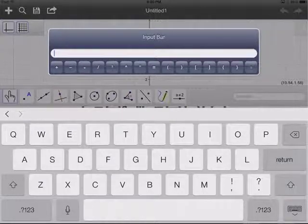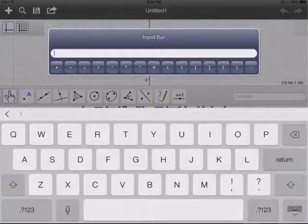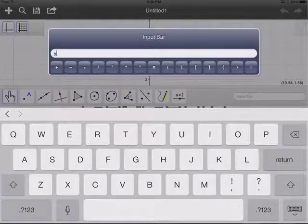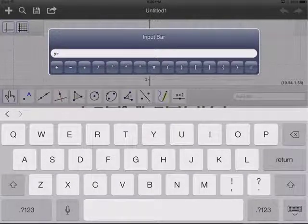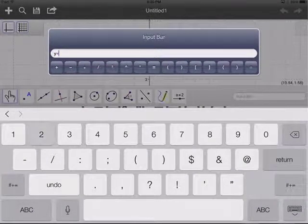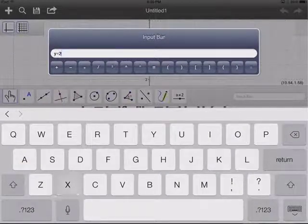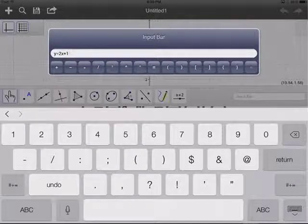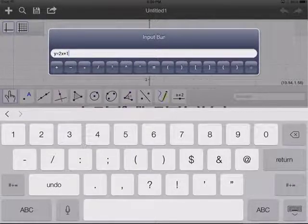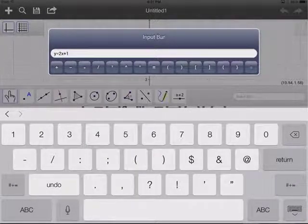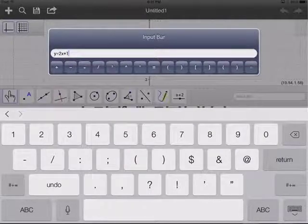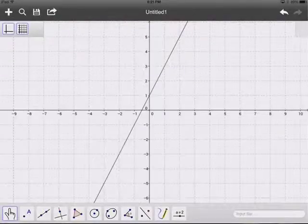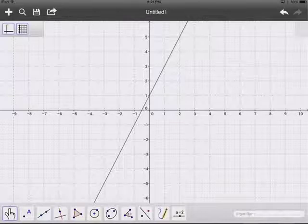I want to type in y equals 2x plus 1. That's a linear function you're familiar with. So I type in y, hit the equals button, go to my numbers and hit 2, back to x, plus, back to the numbers, and 1. You can see y equals 2x plus 1 shows up there. When you're ready to complete your input, simply hit return on your iPad, and the line is drawn.